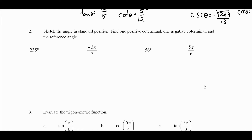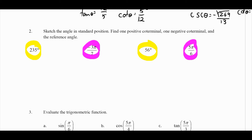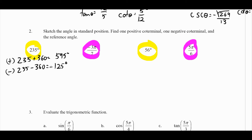Number two: to find positive coterminal, negative coterminal, and reference angles, look at whether the angle is in degrees or radians. For degrees, add or subtract 360; for radians, add or subtract 2π. Starting with 235 degrees: positive coterminal is 235 plus 360, which gives 595. Negative coterminal is 235 minus 360, giving negative 125. For a negative coterminal, you should always have a negative in your answer — keep subtracting 360 until you get there.